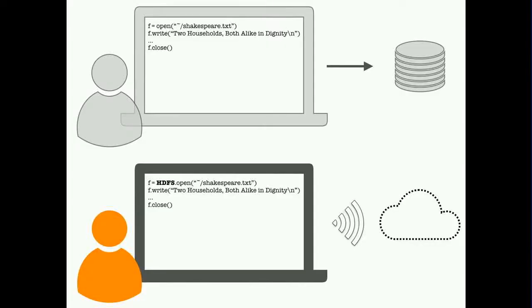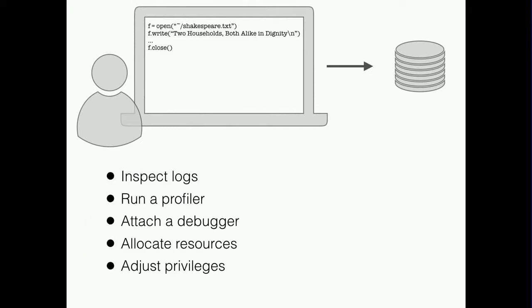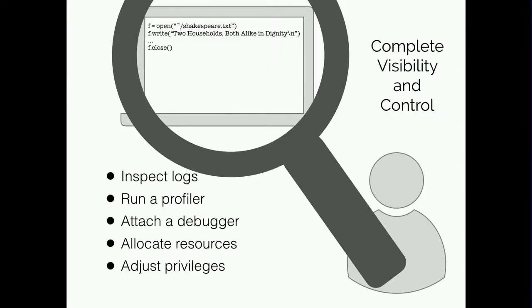Things don't always go smoothly when we run software of any kind. Suppose we ran these two programs and found they were just super slow. With a standalone program, there are lots of things we can do: inspect the output, attach profilers and debuggers, adjust the resources allocated to the program, run it with different privileges, and so on. With any of these tools, we would have complete visibility of the program and how it behaves, which lets us get to the bottom of any problems.